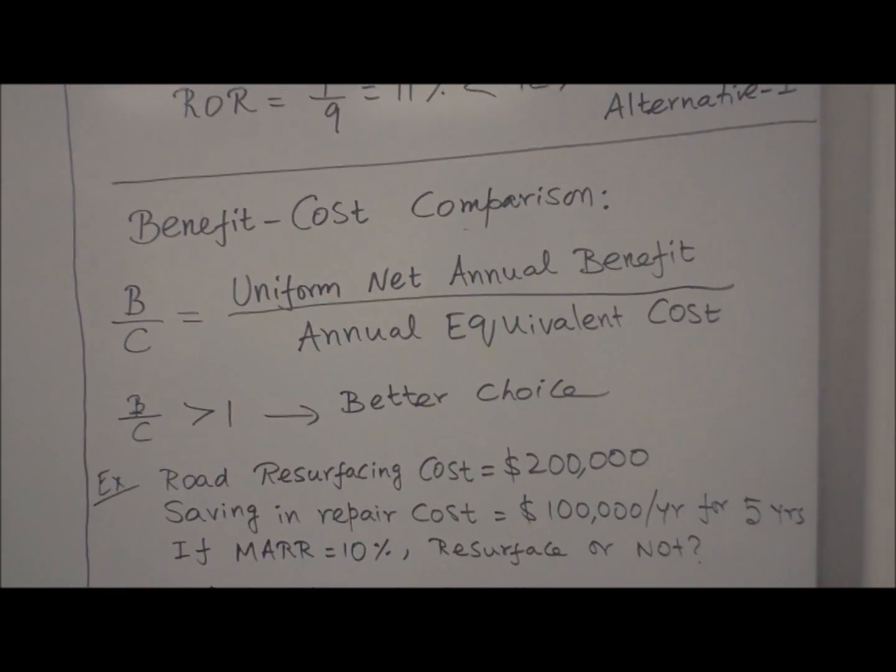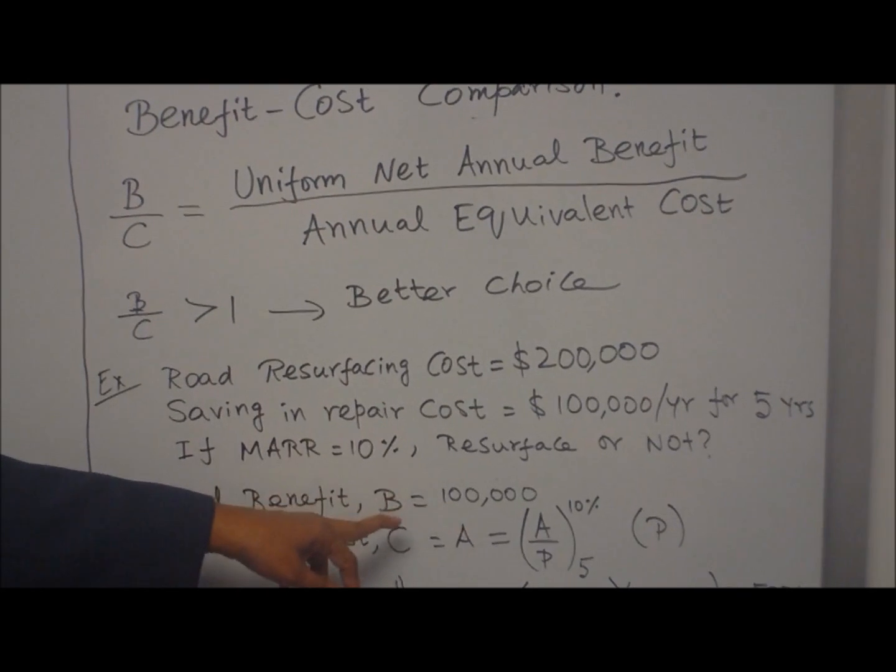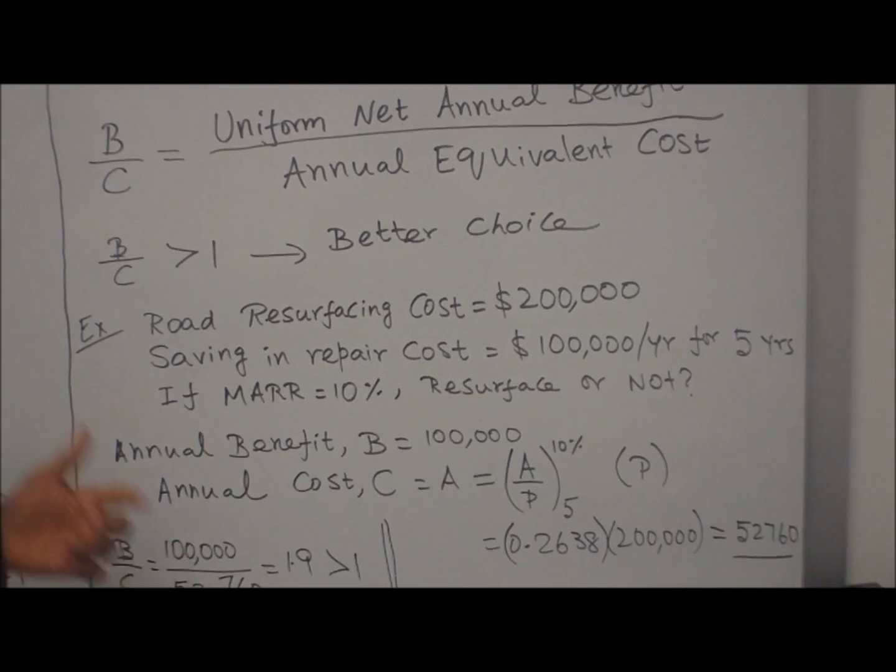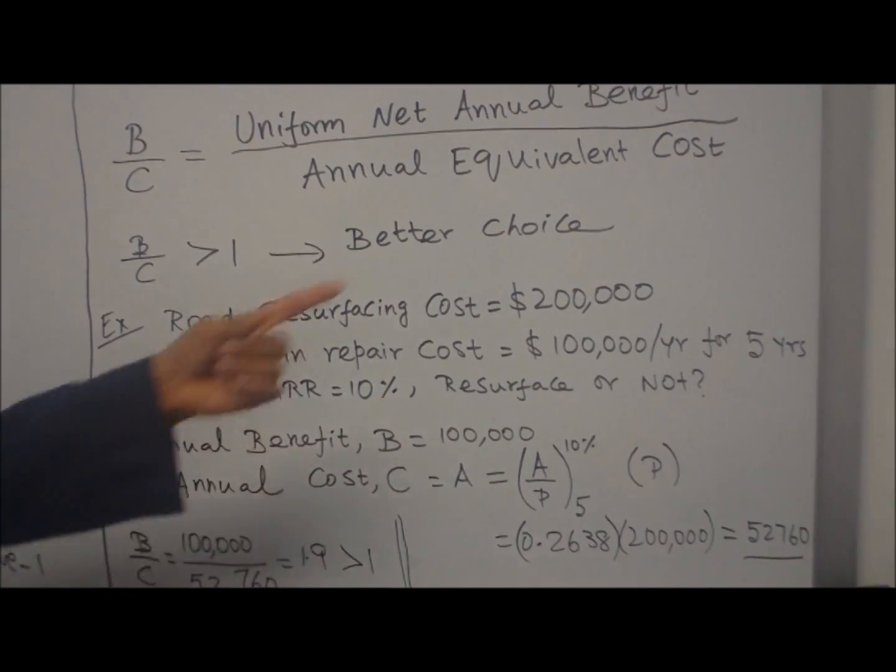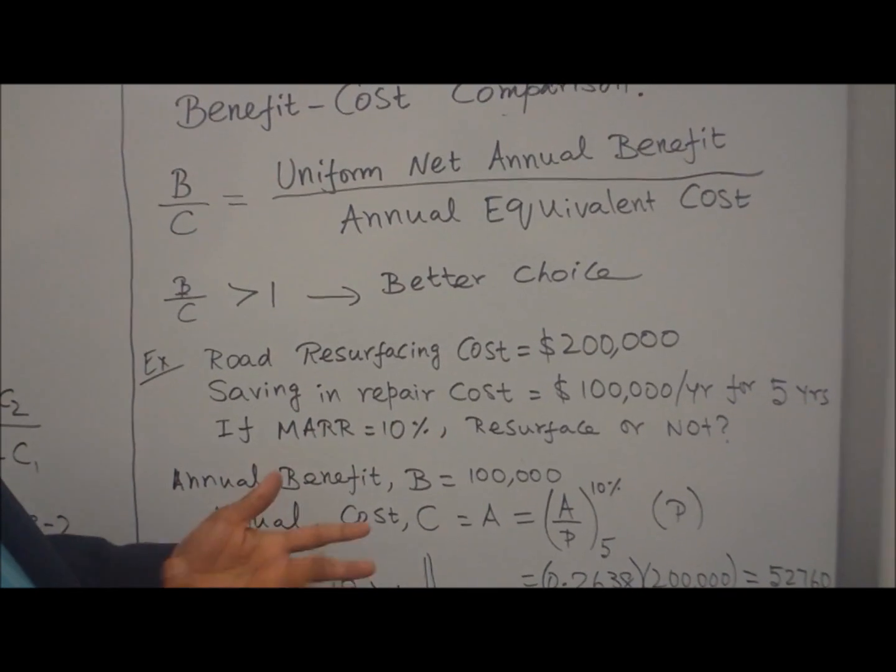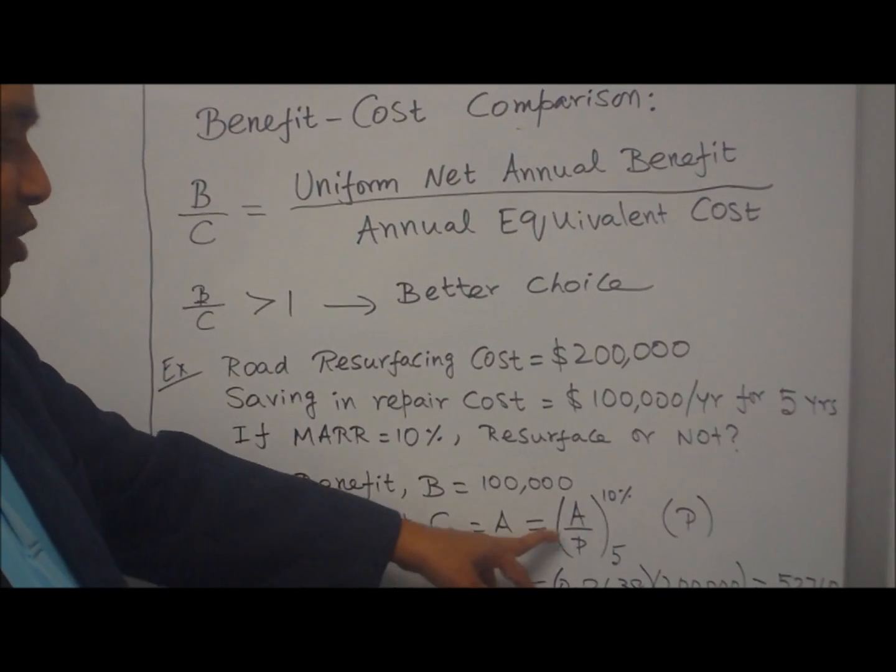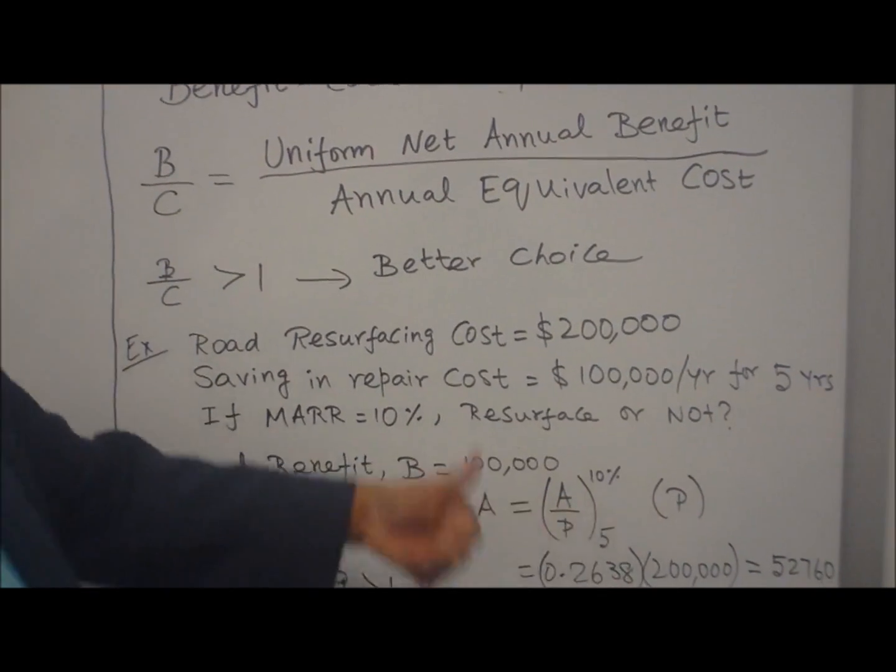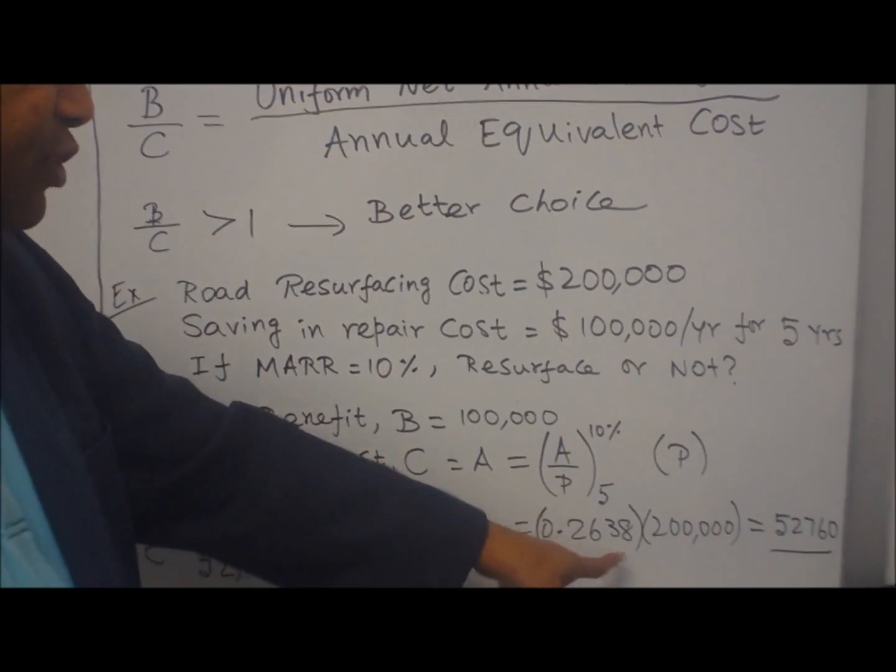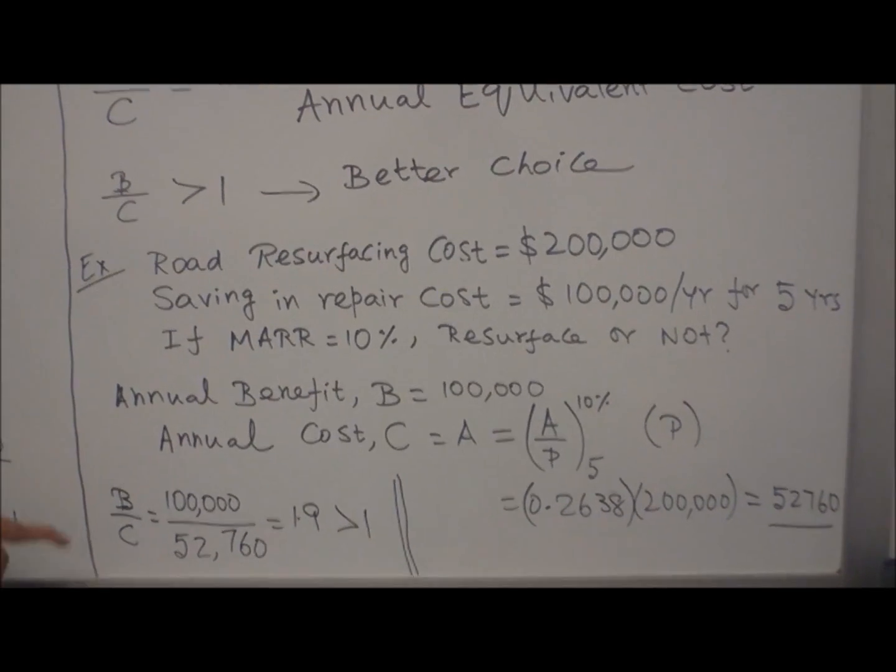What is the best choice? Let us do benefit-cost comparison. Annual benefit, that means how much you save, is $100,000 per year saving in repair. Now what is the annual cost? You are given $200,000 initial cost for over 5 years. What will be the annual cost? You have to convert that into A. So A equals (A/P) times P. P is your present value, you are converting into A value. Using the same table, find the ratio, multiply by 200,000, you get $52,760.